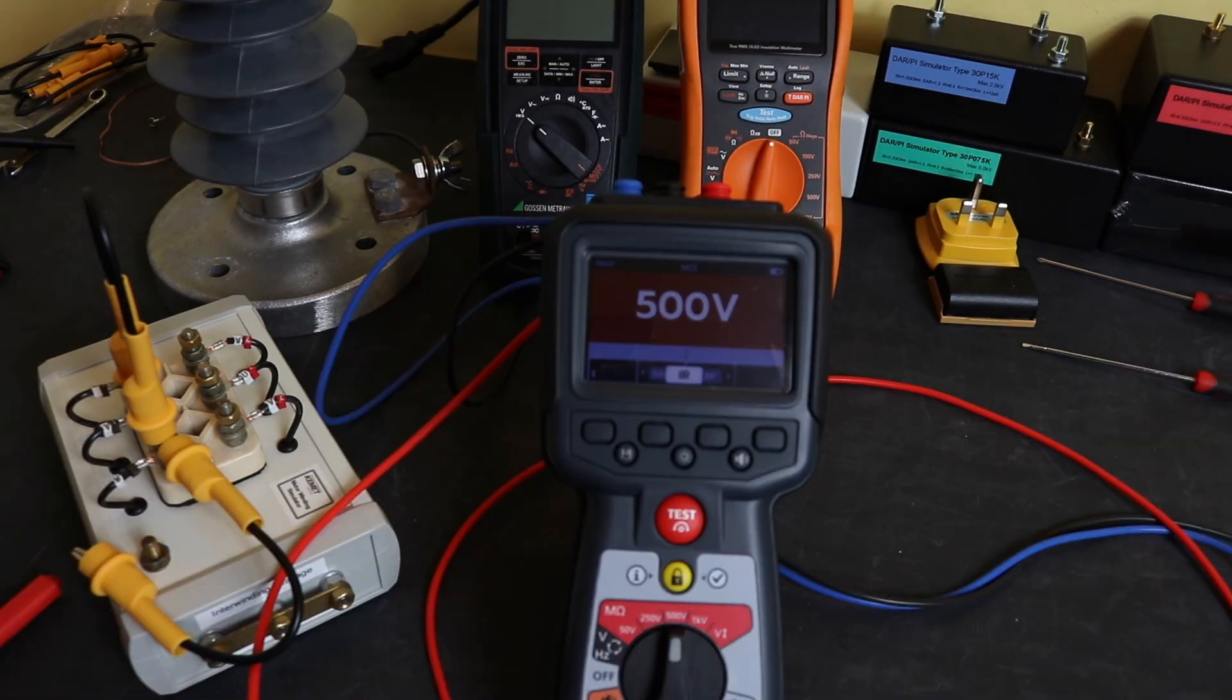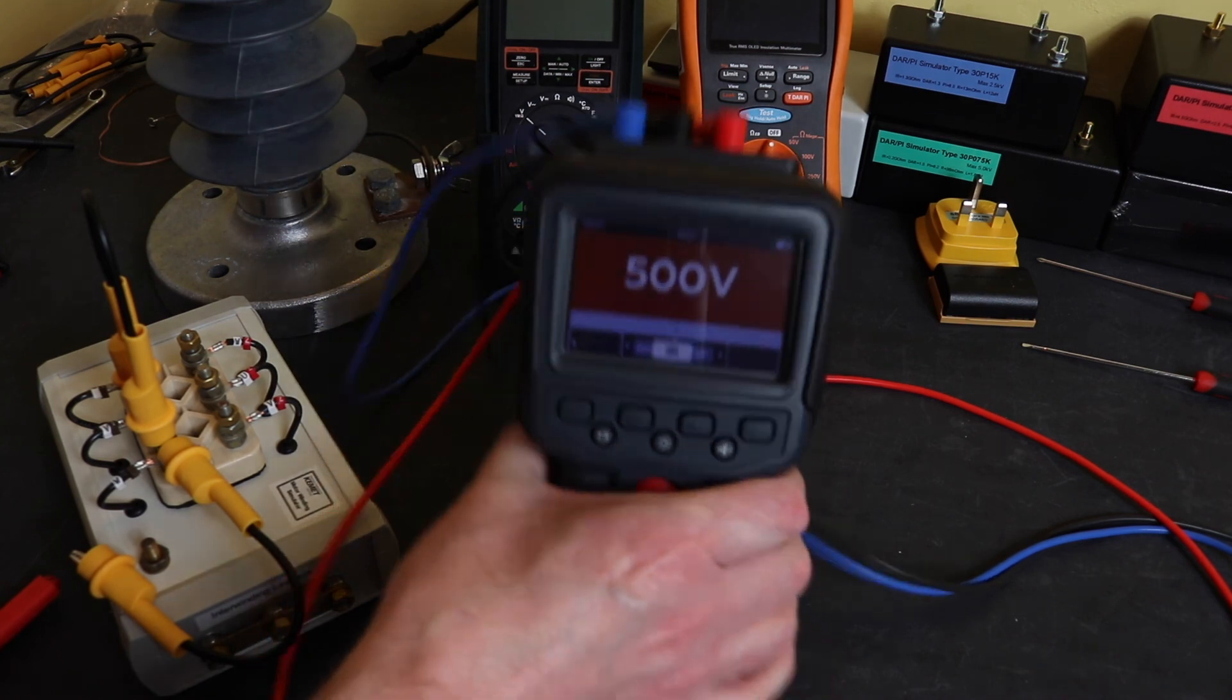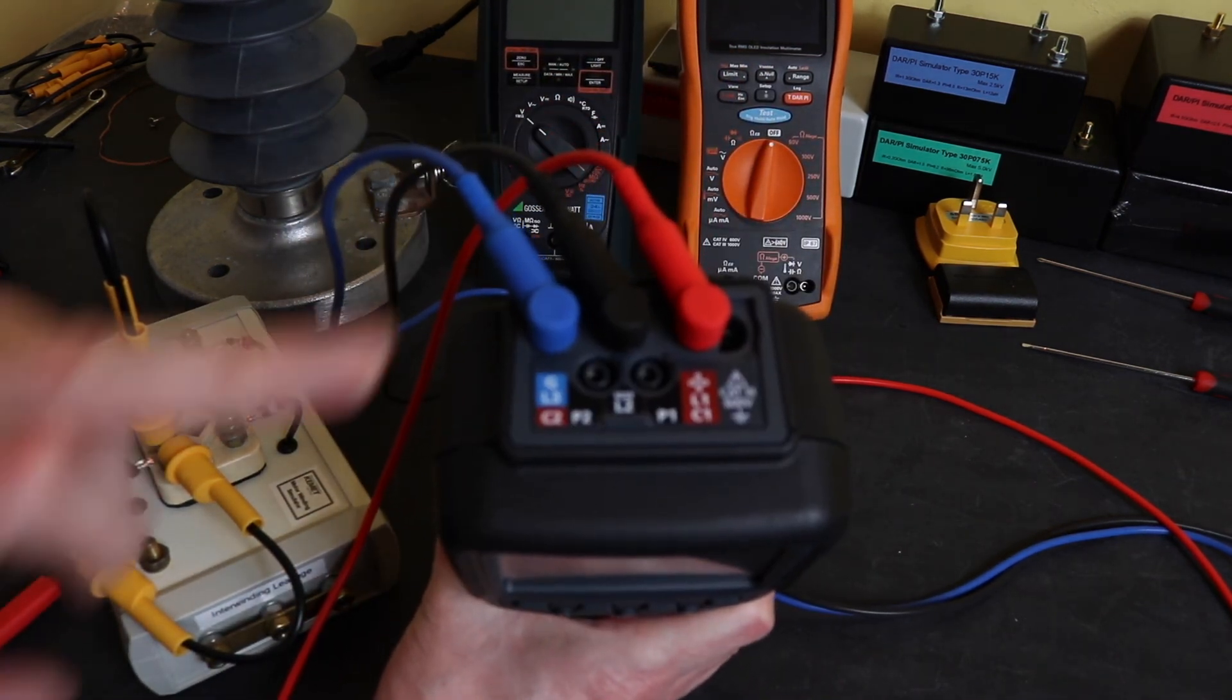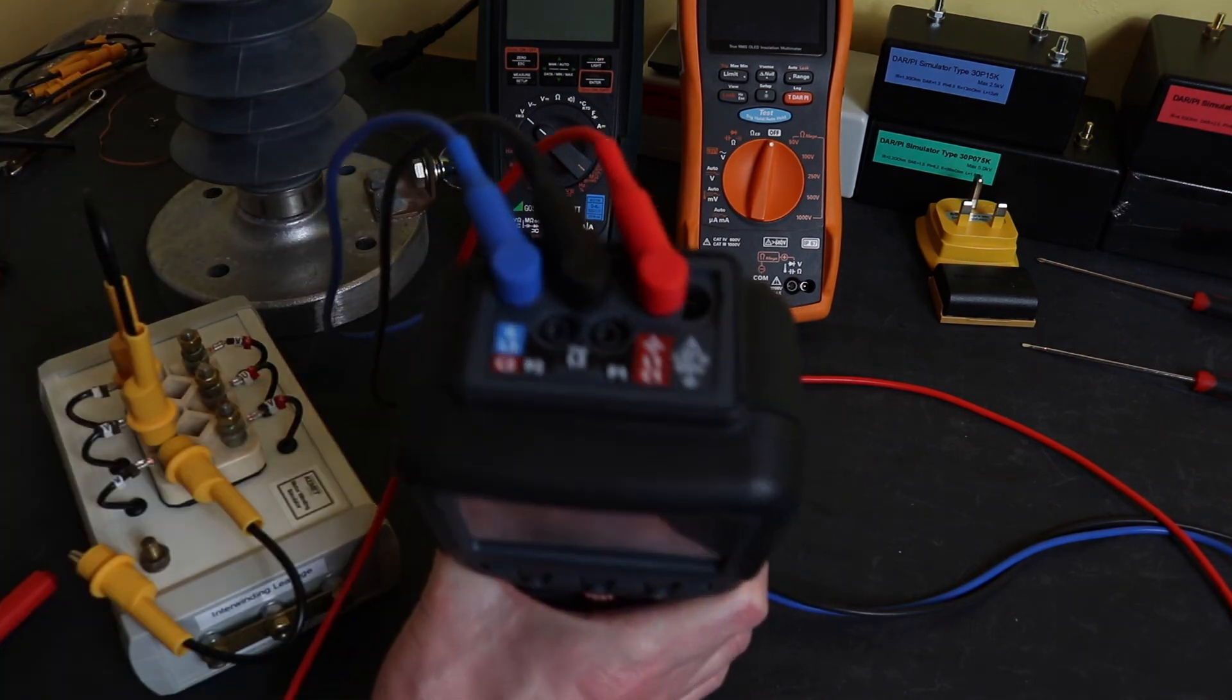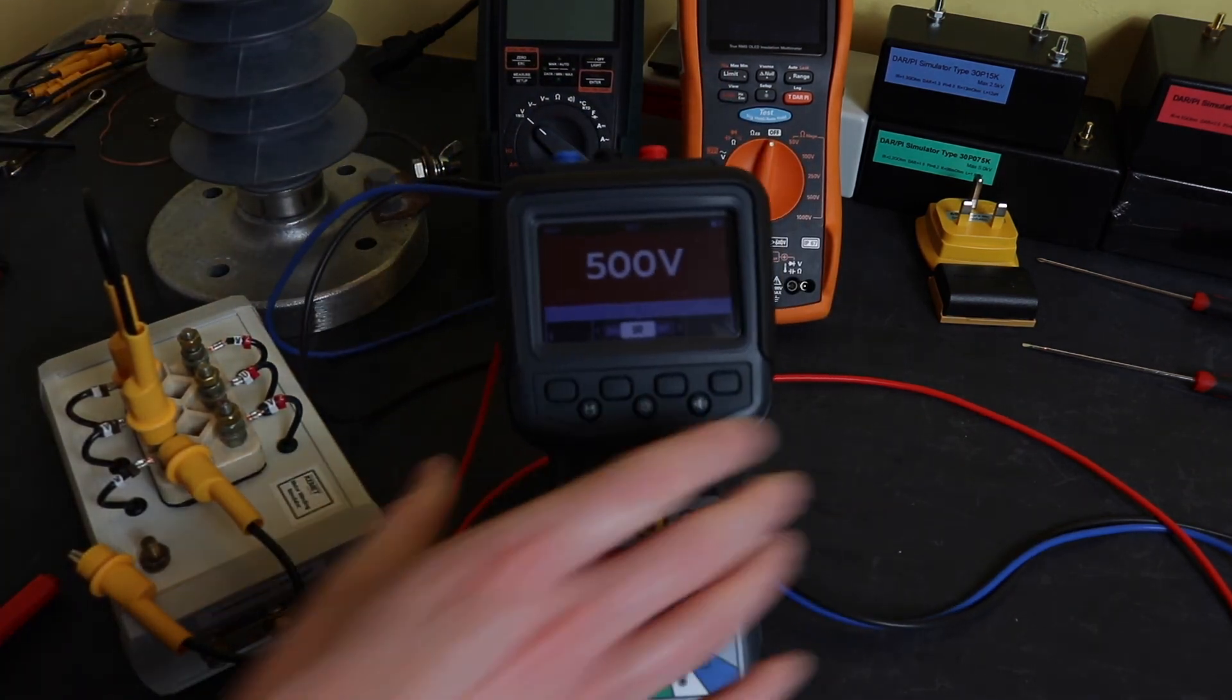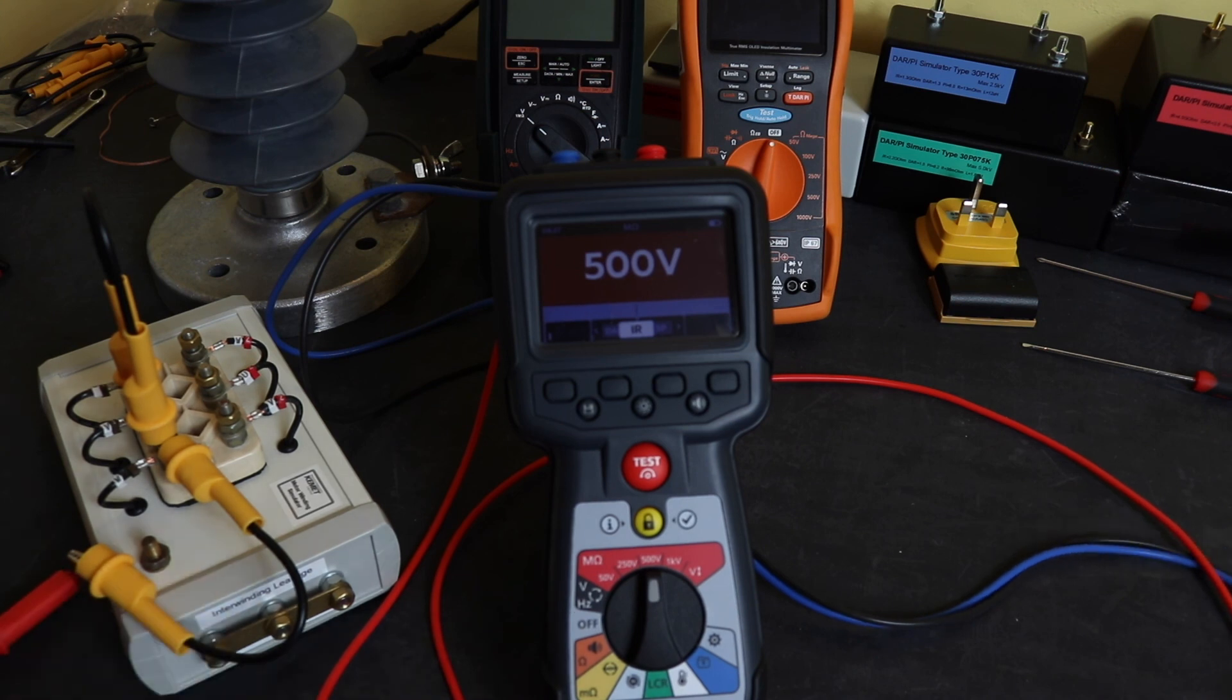The second way of using a guard terminal on an insulation tester is to actually make it a three-wire test. You can see at the top I've plugged three separate leads into the positive, negative, and guard terminal. Again, I have my motor winding simulator in open winding configuration.